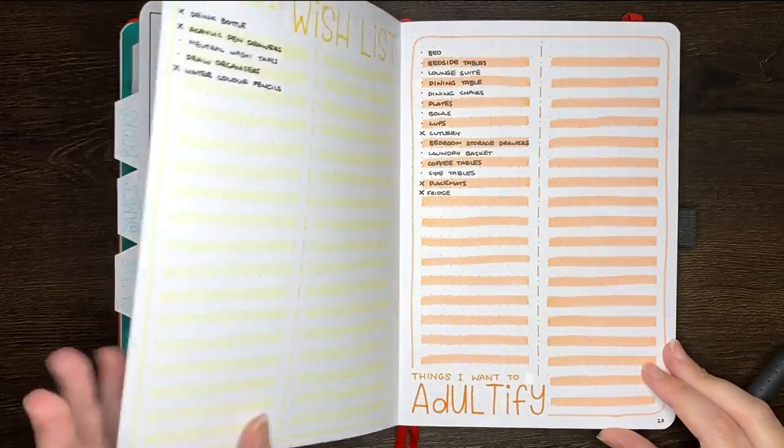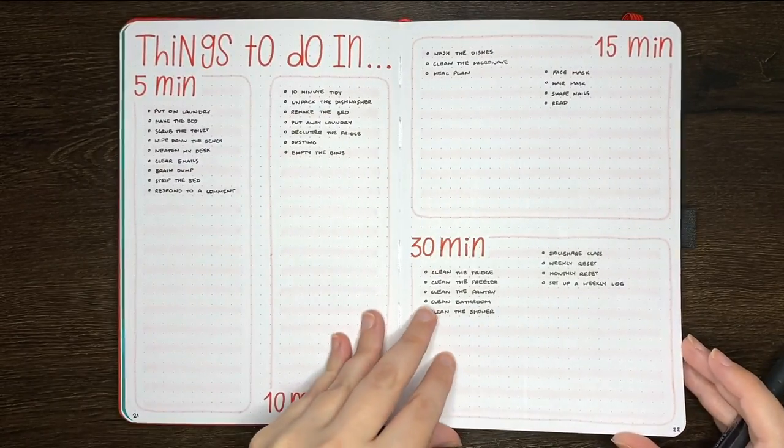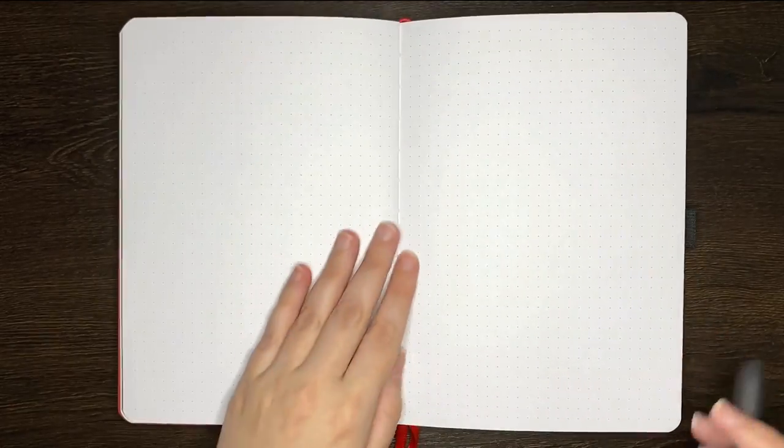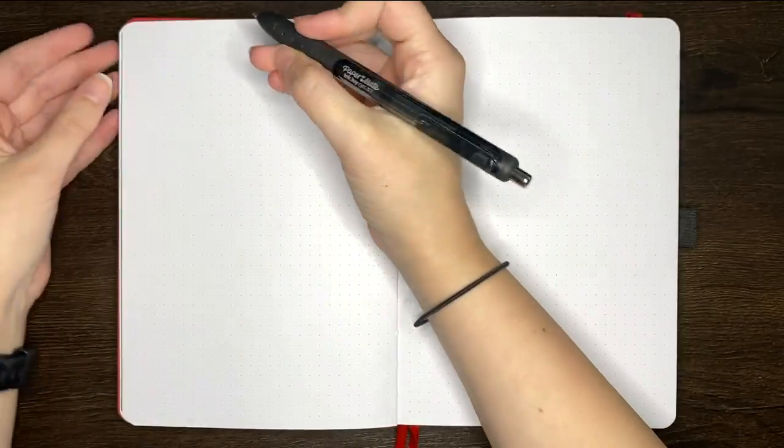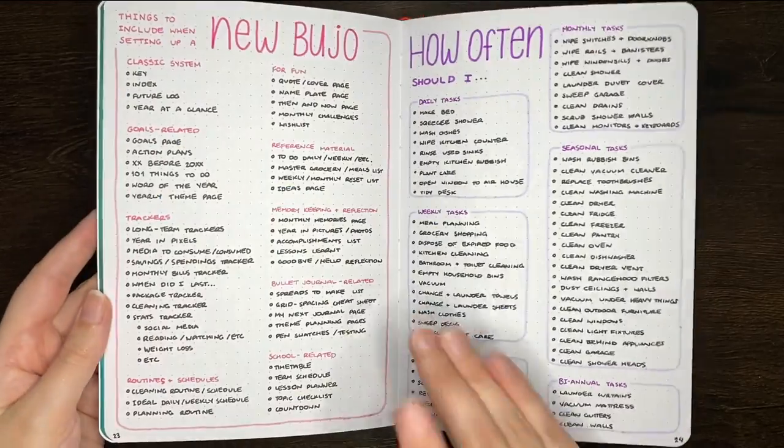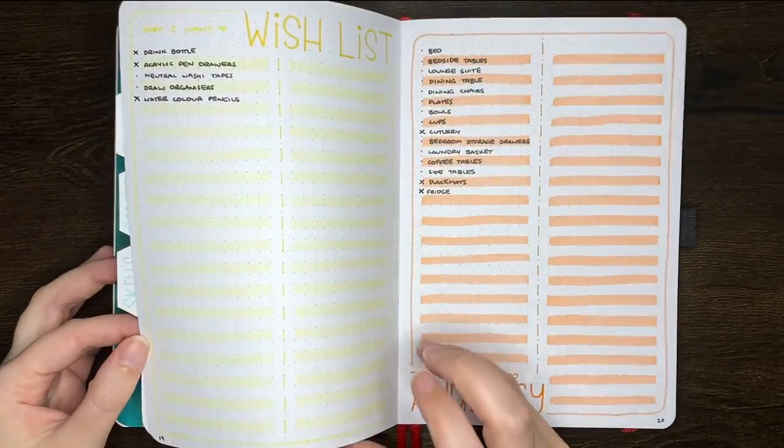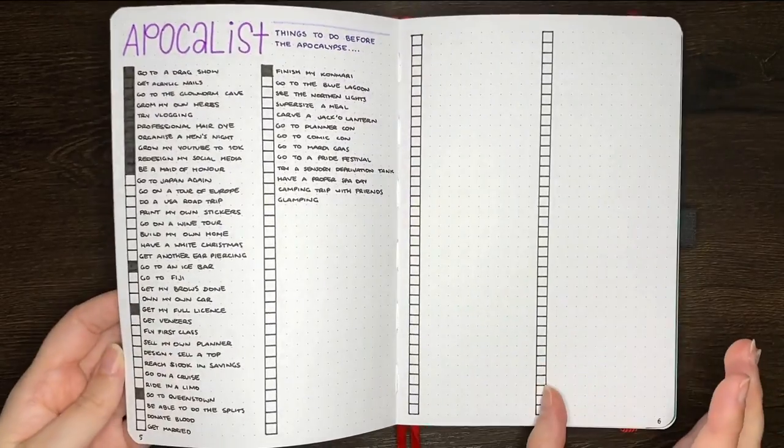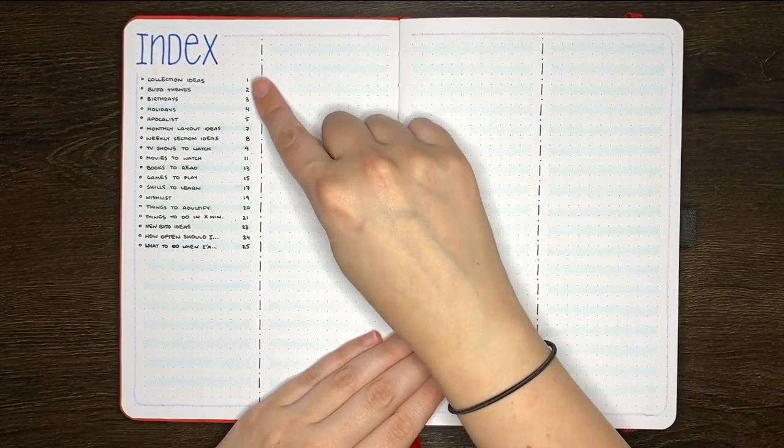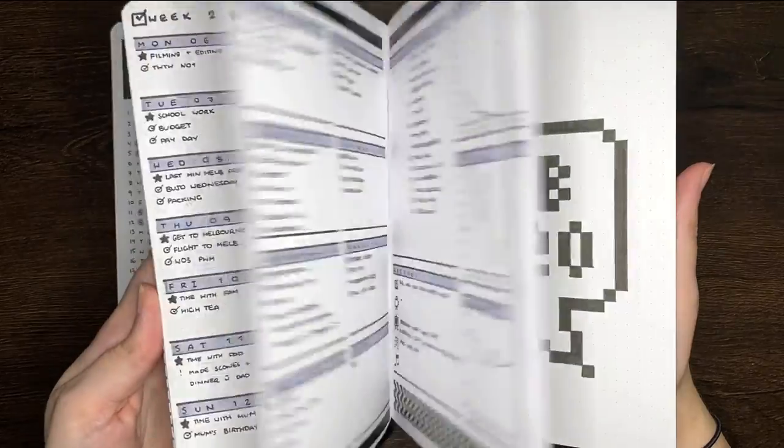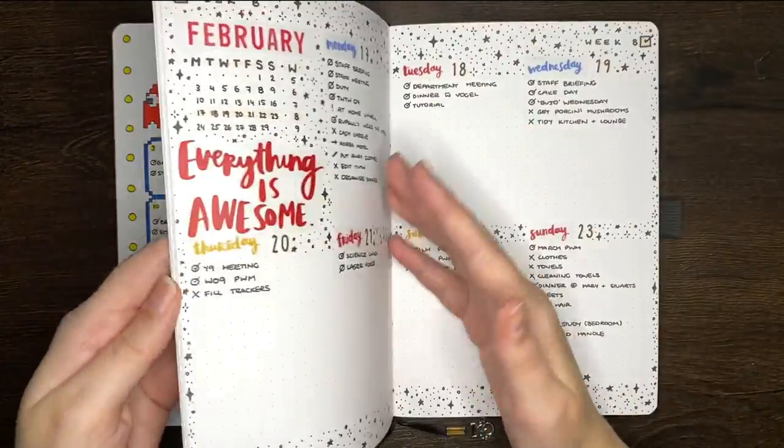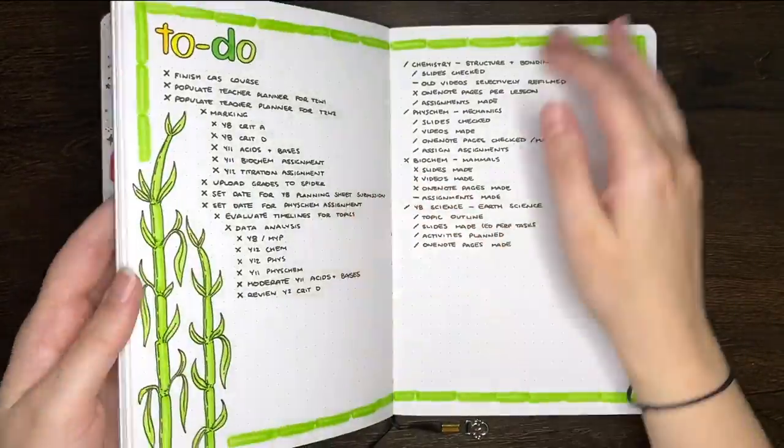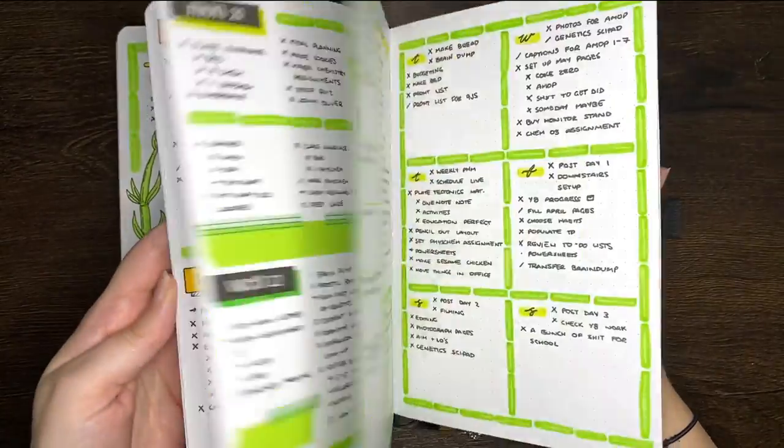So that's the what, but how about the why? The general premise of the original bullet journal method is that any new entry or collection to your journal just goes on the next available space or page. This means that there may not be any real rhyme or reason to the ordering of the pages, outside of them just being the next thing that you wanted to set up. This is where the index comes in. Its purpose is to make finding things easier. Rather than flipping through page after page in your journal, trying to find that one collection that you set up however long ago, you can instead refer to your index, which tells you which page number to head to.